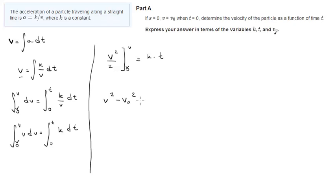Now we solve for v. We get v equals the square root of 2kt plus v naught squared, and that is our final answer.